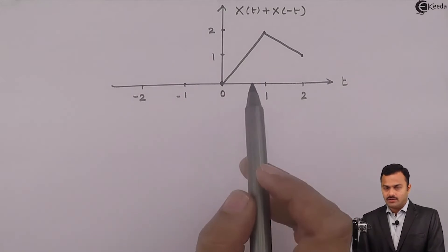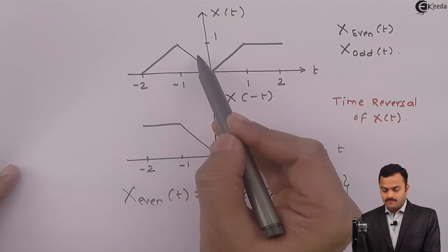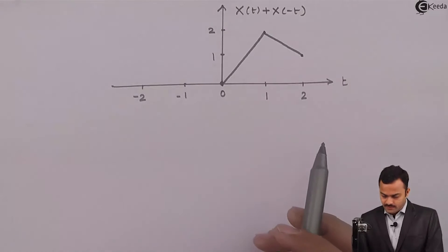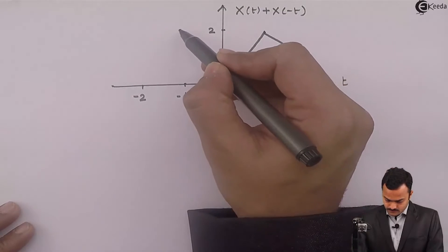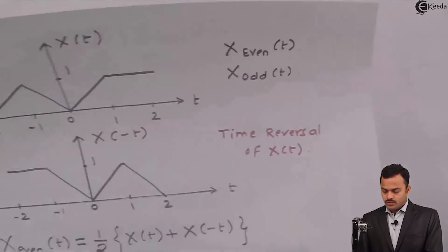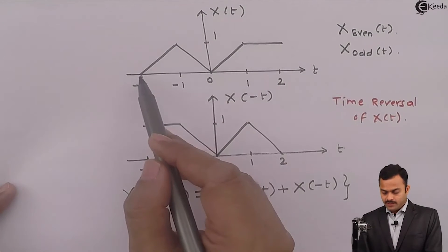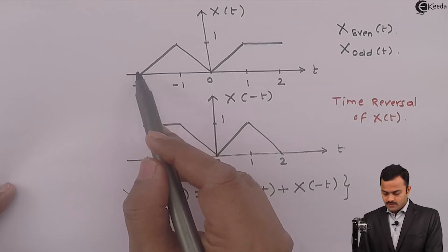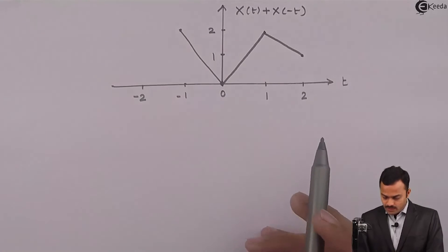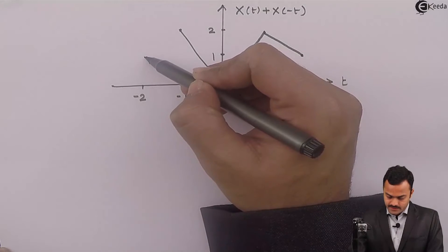Let's repeat this for the negative side of the t-axis. From zero to minus one, slope is one for both signals, so the resultant slope is two. From minus one to minus two, x(t) has slope minus one and x(-t) has slope zero, so the resultant slope is minus one. At t equal to minus two, x(t) equals zero and x(-t) equals one, so zero plus one equals one. So at t equal to minus two the value is one with slope minus one.